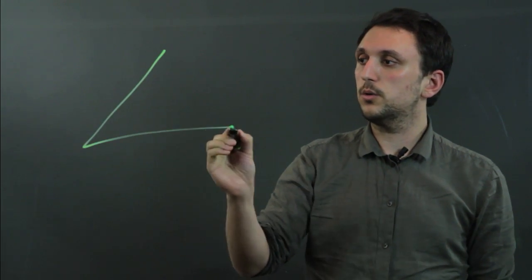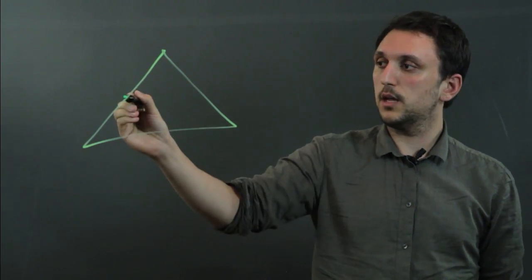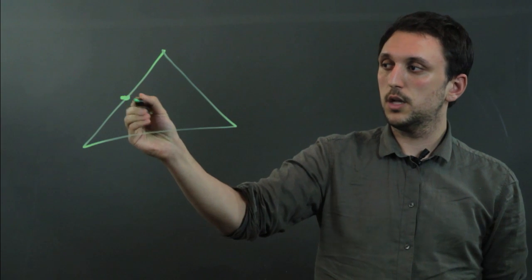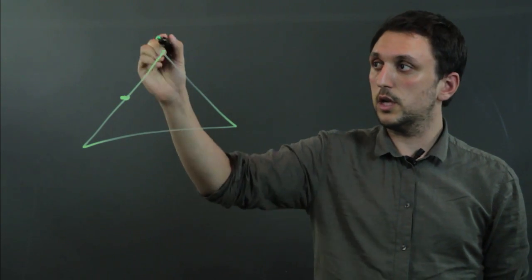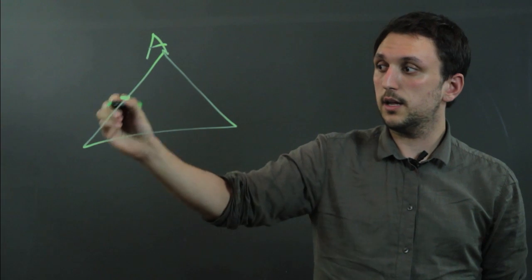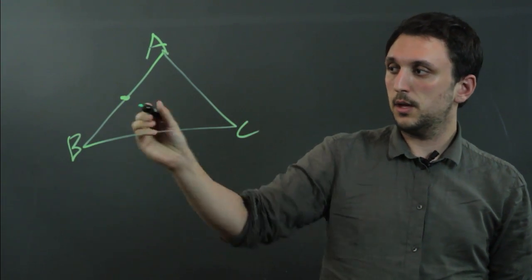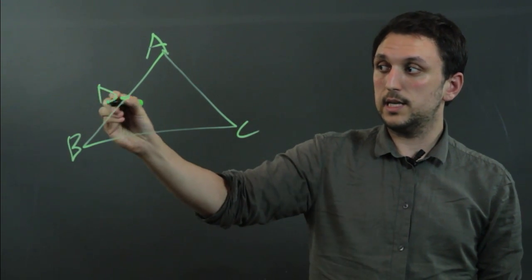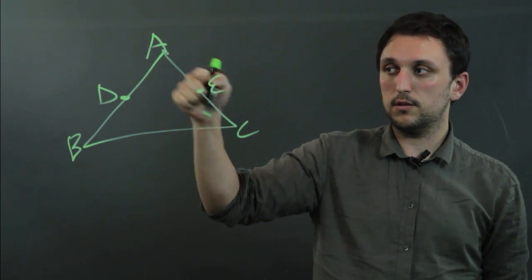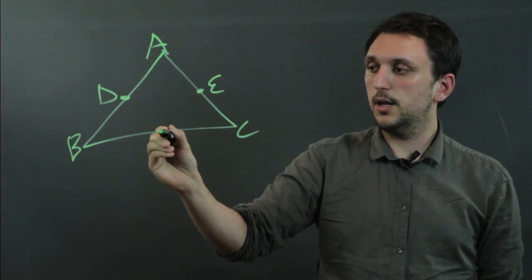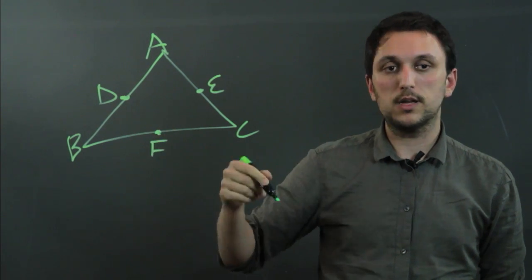So let's take a triangle, and the medians would be this — it's the median of this side. We can call this triangle ABC, and we can call this point D, and this is the median of AC, and we'll call F the median of BC.